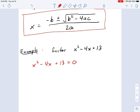And the solutions are this, x equals negative b. Now, where's b? That's negative 4, right? So negative b is positive 4 plus or minus the square root of b squared, which is 16, minus 4 times a. a is 1, times c. c is 13, all divided by 2a. a is 1, so this is 2.